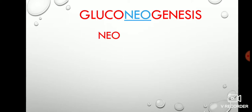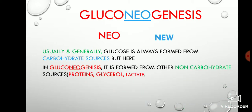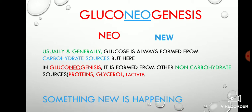Now we'll study gluconeogenesis. Here you need to focus on the word 'neo', which sounds like 'new'. So something new is going to happen. You already know genesis means formation. Normally, glucose is formed from carbohydrate sources — when you take a high-carbohydrate diet, glucose is released. But in gluconeogenesis, something new happens: instead of glucose being formed from carbohydrates, it is formed from non-carbohydrate sources like proteins, glycerol, lactate, etc. The trick is: 'neo' means something new is happening.